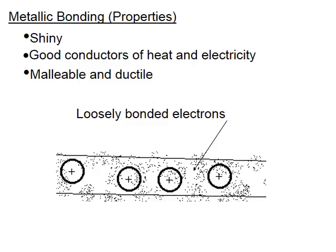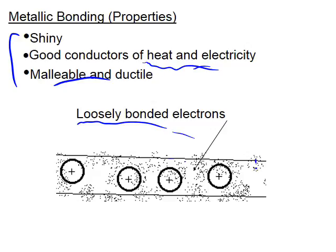Metallic bonds explain why metals are shiny and good conductors of heat and electricity, and are malleable and ductile. All these properties can be explained by loosely bonded electrons. When bent, electrons readjust so there is no crack. Electrons are loosely bonded, so they can readily conduct from one end to the other. Metals are shiny because loosely bonded electrons jump between closely spaced orbitals when light shines on them, and when they return to lower levels they give off light.